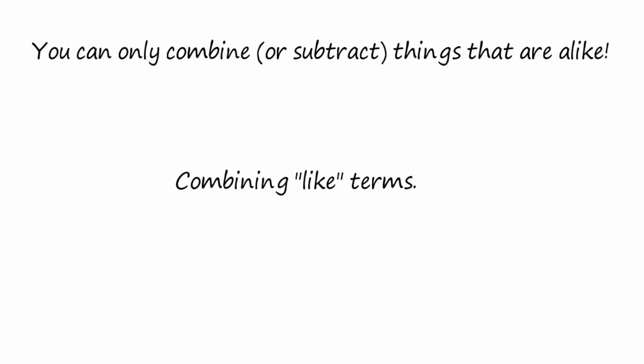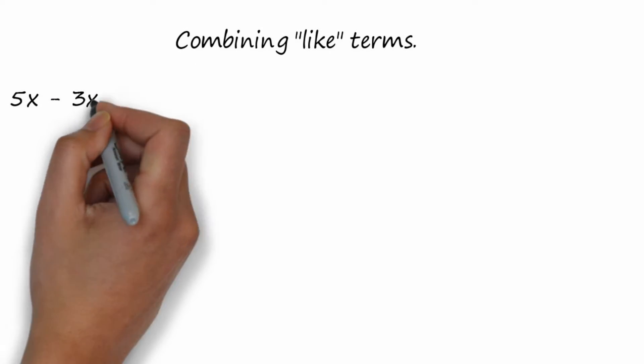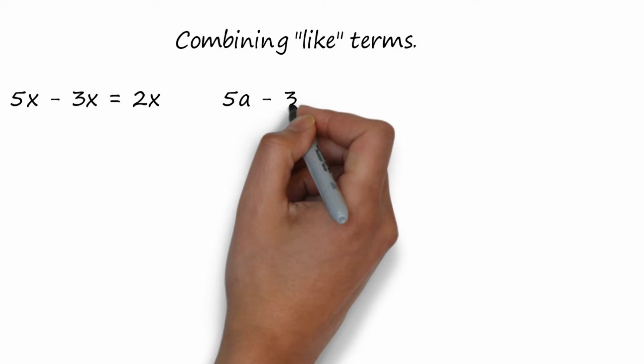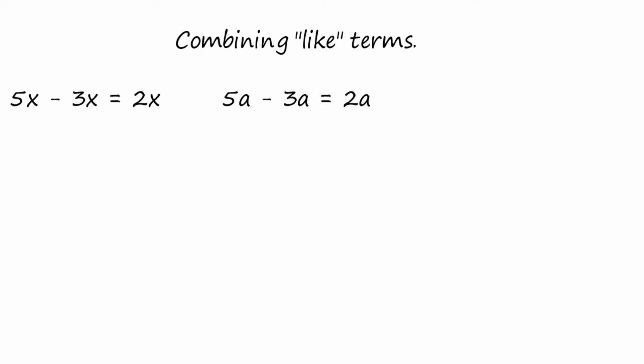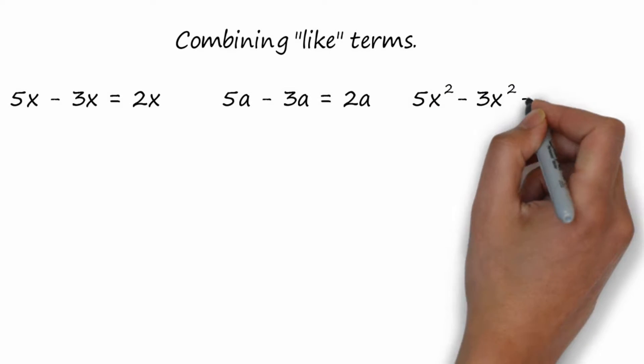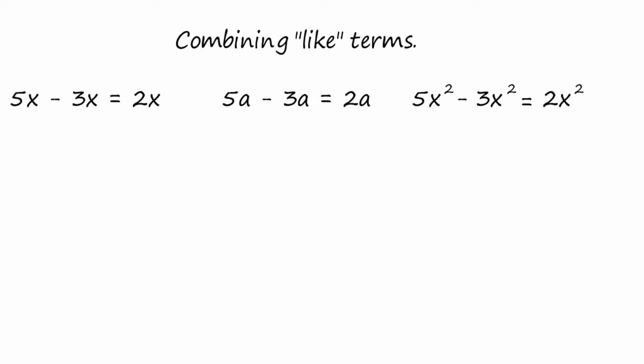In math, we have expressions like 5x - 3x = 2x. And we can do that because it's x. Or 5a - 3a = 2a because it's a. Even 5x² - 3x² = 2x² because everything is x squared.